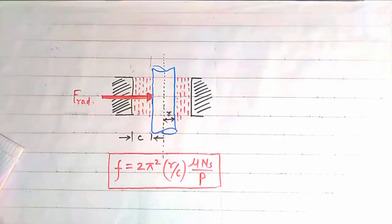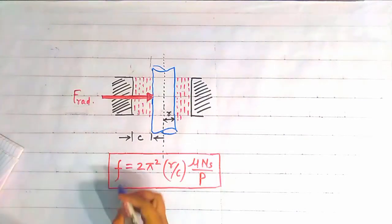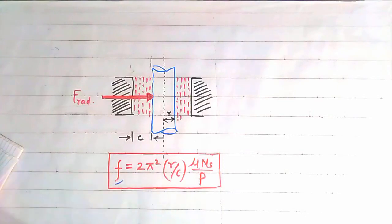Hello friends, welcome to my YouTube channel. Today we are going to discuss Petroff's equation in this series of lectures on journal bearing. This equation is used to determine the coefficient of friction in journal bearings, denoted by F — that is, the friction between the journal and the lubricant can be found using Petroff's equation.